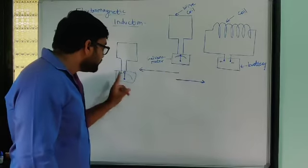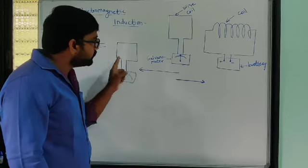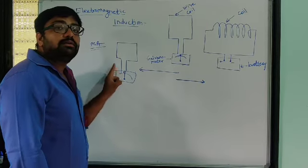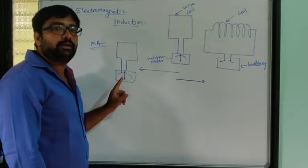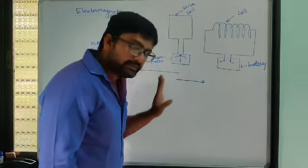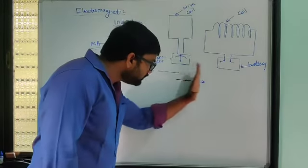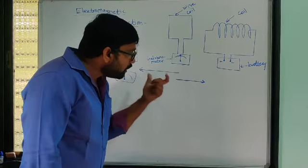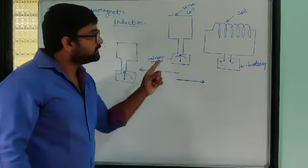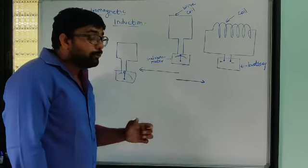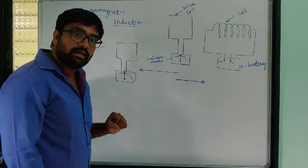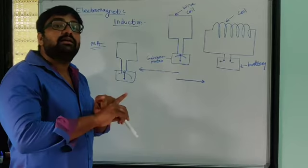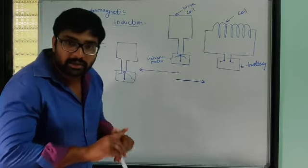When we move away from the first coil, current flows in the second coil. When we stop, it shows zero. When we move toward the first coil, we again see deflection throughout the motion. When we stop again, zero reading — current is not passing through that coil.